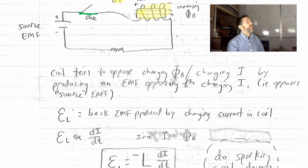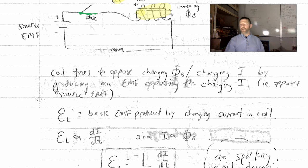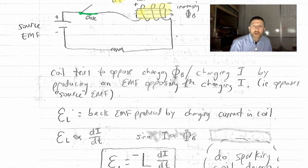And one other reminder, flux is a scalar, but we can keep track of the positive or negative with our directional thumb. You're using a direction to indicate a scalar magnitude, whether it's positive or negative. Just wanted to clarify that. Okay. So what we get is what is called a back EMF.